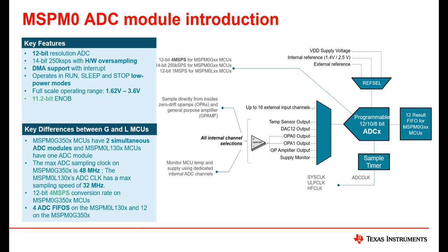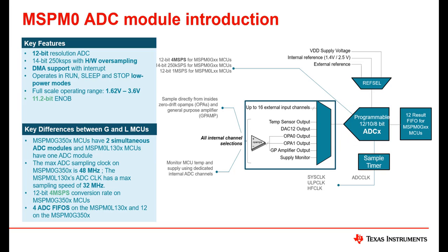Now let's take a closer look at the actual ADC module. The MSPM0 ADC module resolution can be configured to 12 bits, 10 bits, or 8-bit mode, with an effective number of bits of up to 11.2 bits. The ADC module is configured with a wide range of input channels; in addition to external pins, internal channels can also be selected such as the temperature sensor, supply voltage, DAC, and amplifiers.